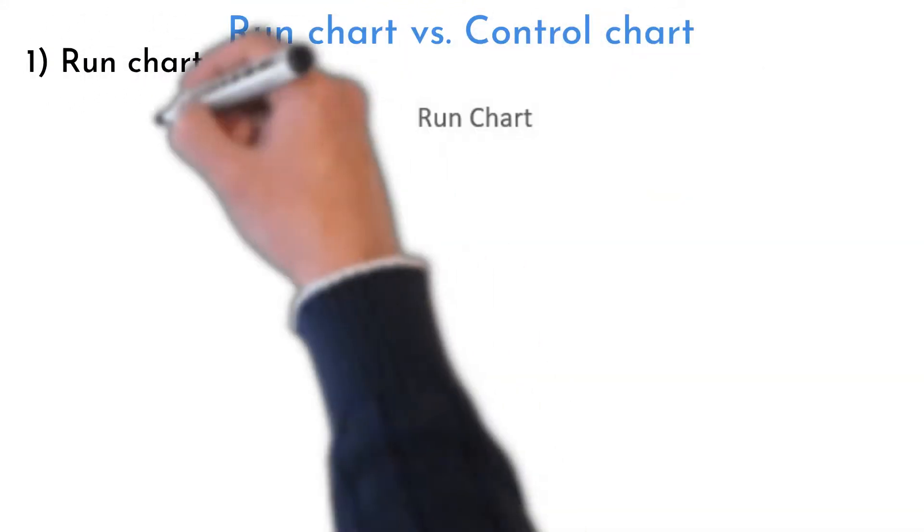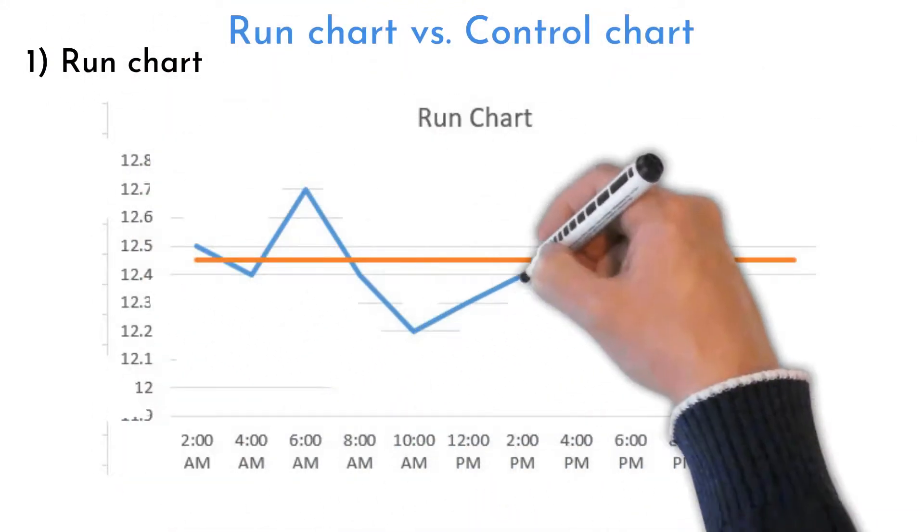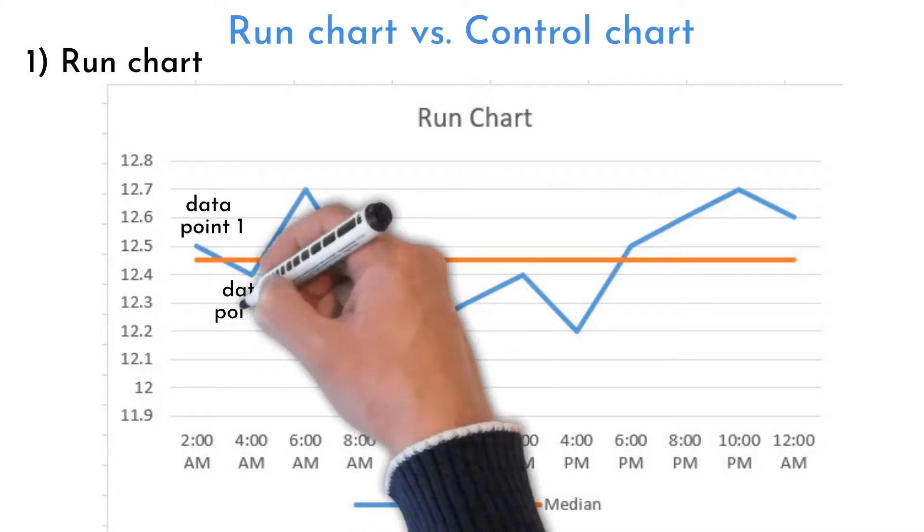Welcome to Six Sigma Mania. A run chart is a data line graph showing measured values in chronological order.